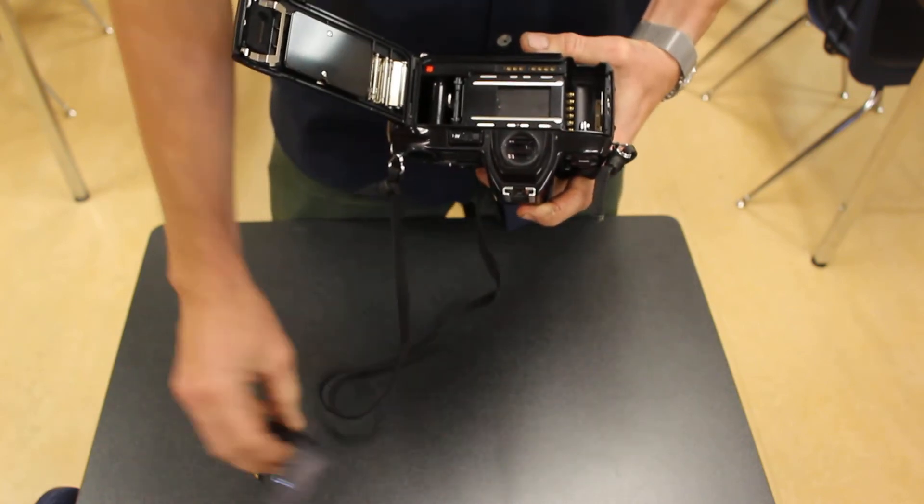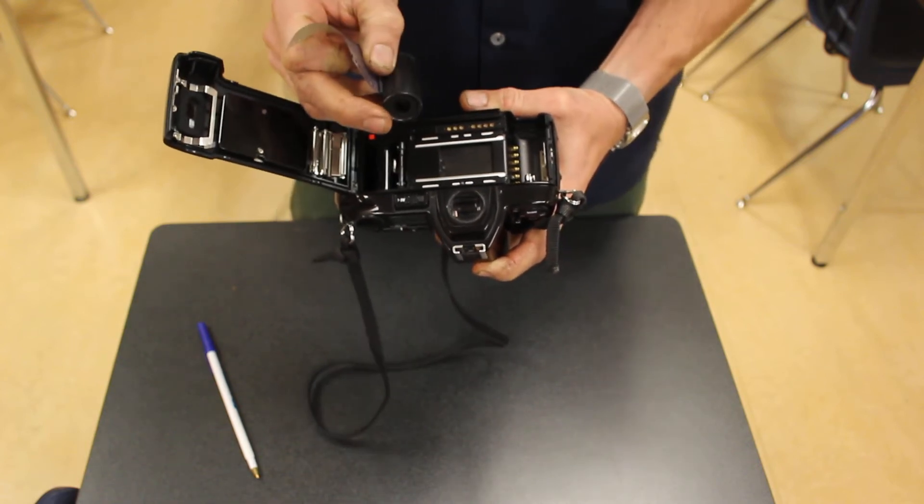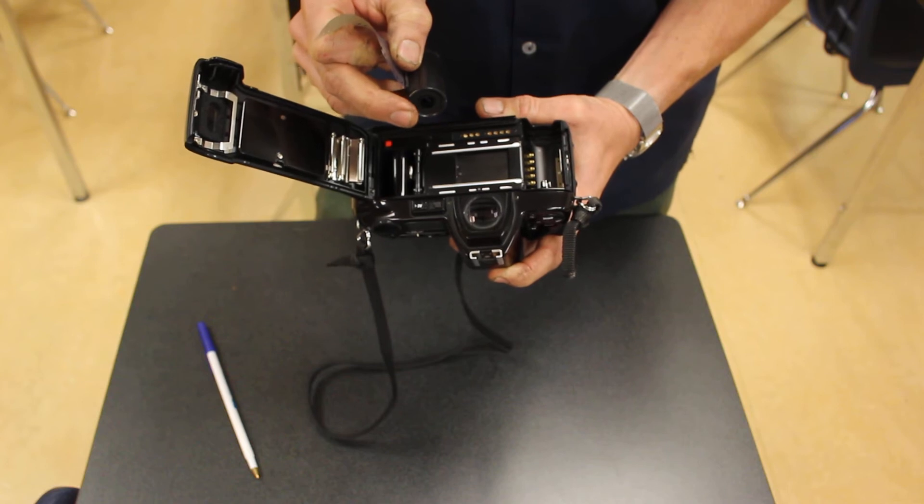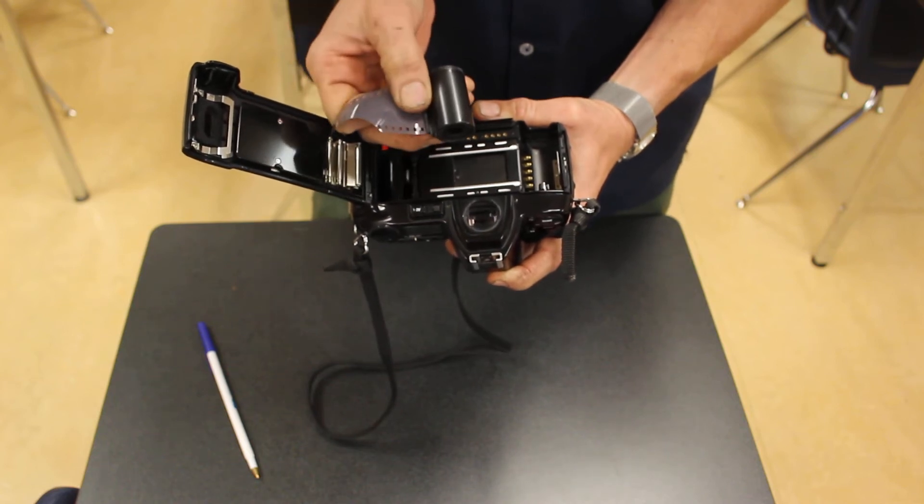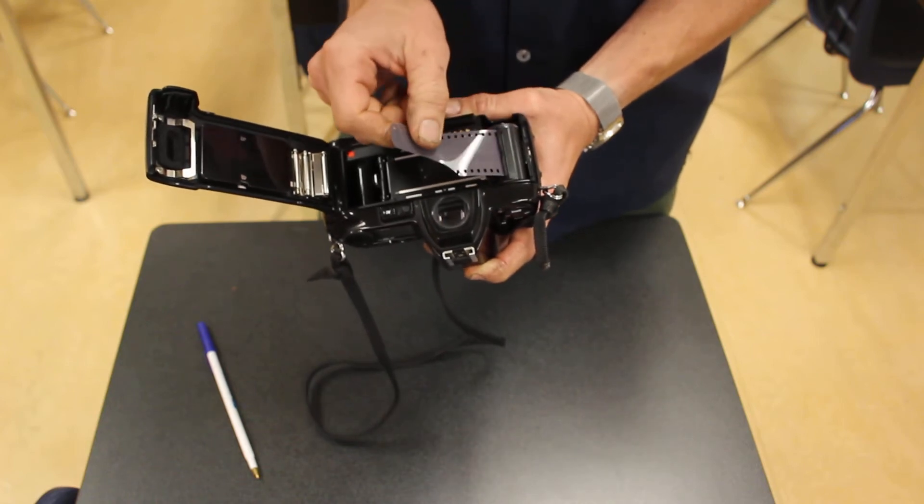To put the film in, you're going to find the canister that has the open end. The shiny side of the film should be up, and that will slide into the camera.